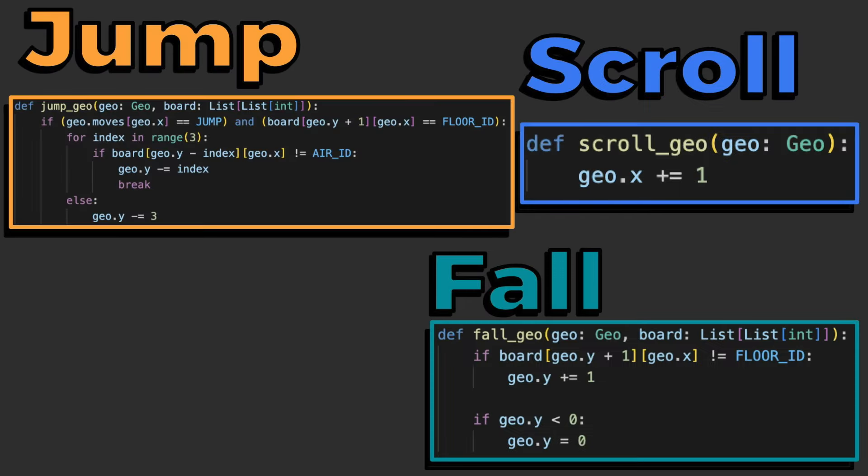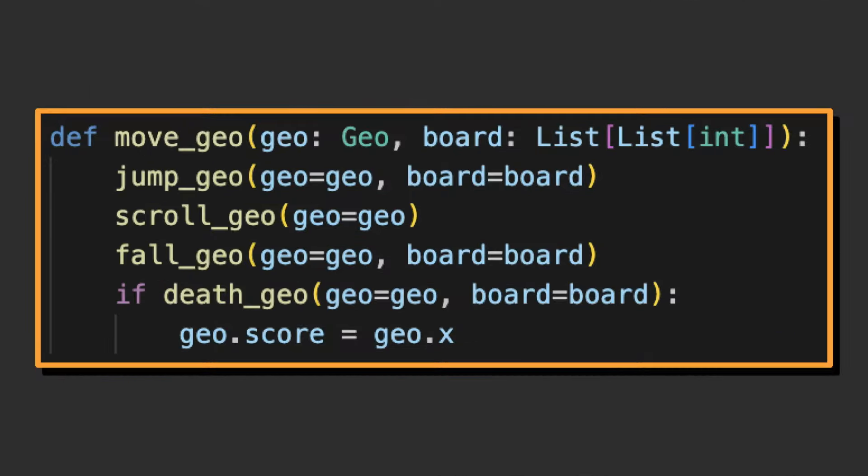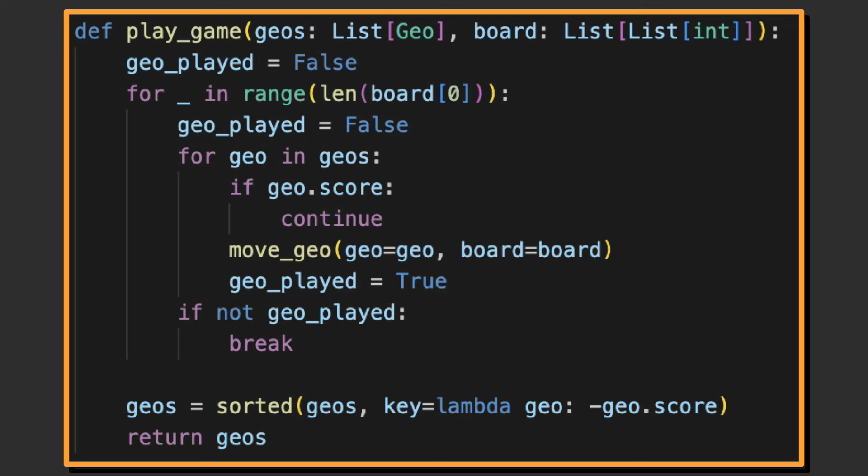Now it's time to look at the game. The game consists of four functions, jump, scroll, fall, and death. These are called in their respective order in the move function. And then the move function is called in our game loop, until either a Geo completes the game, or all have died.